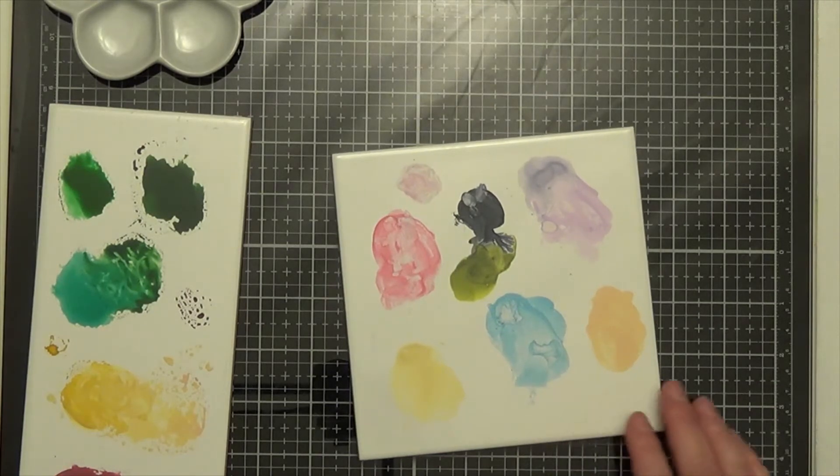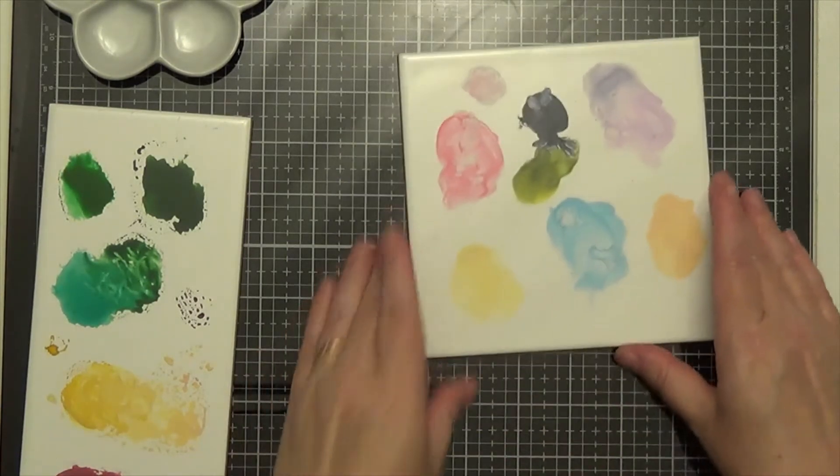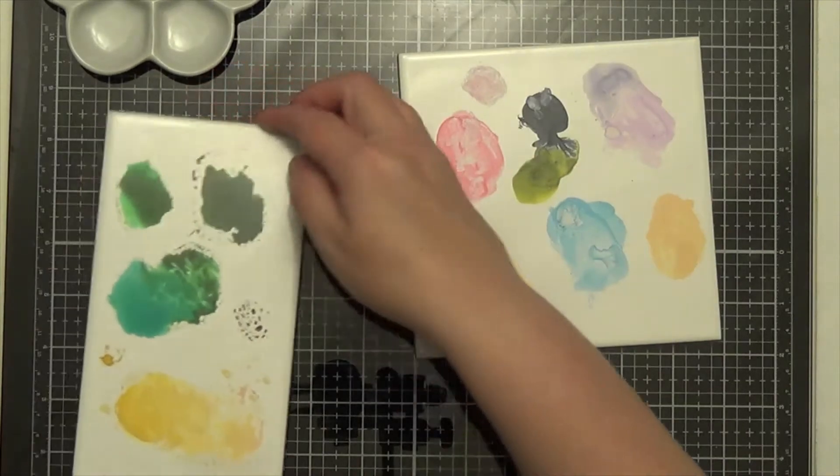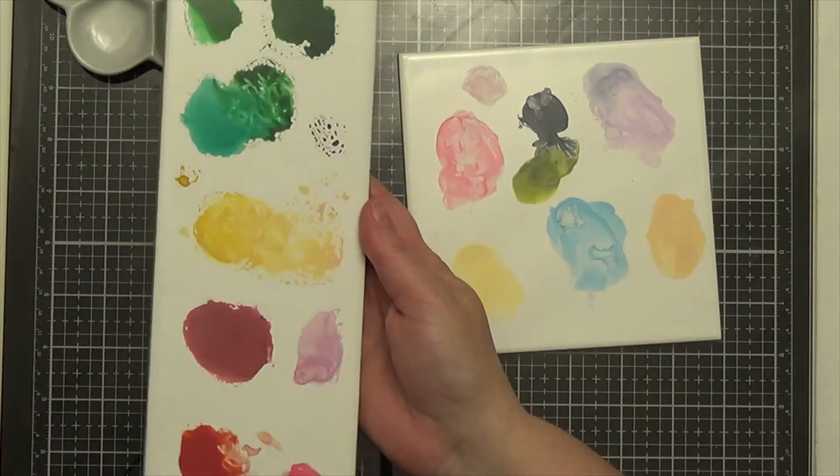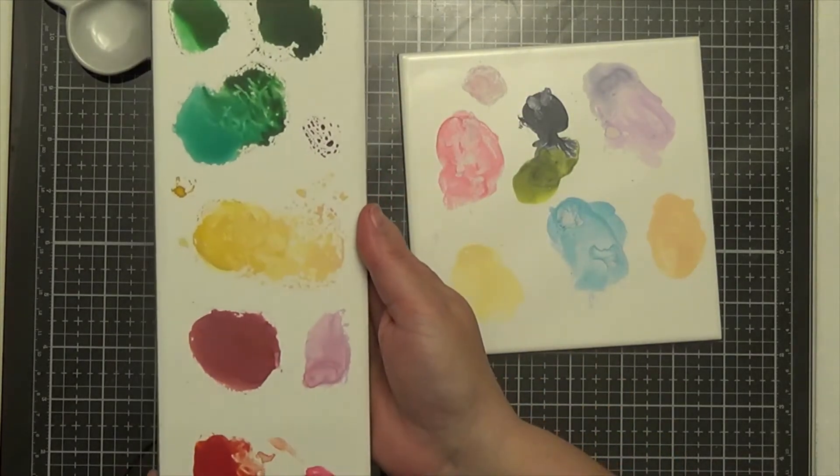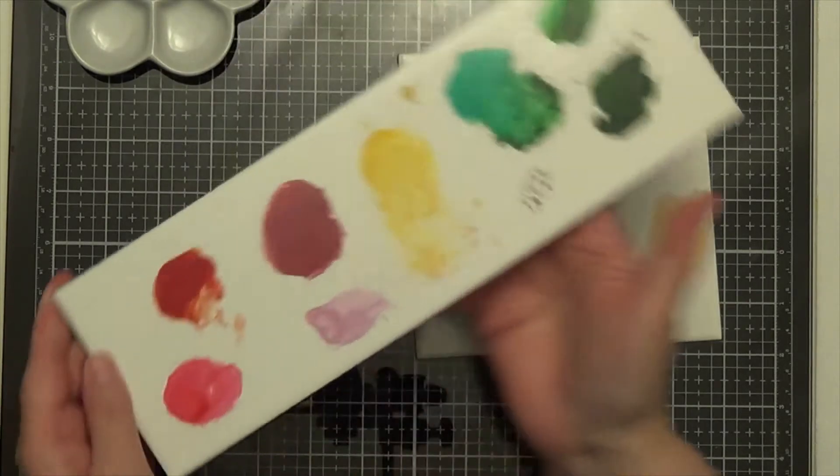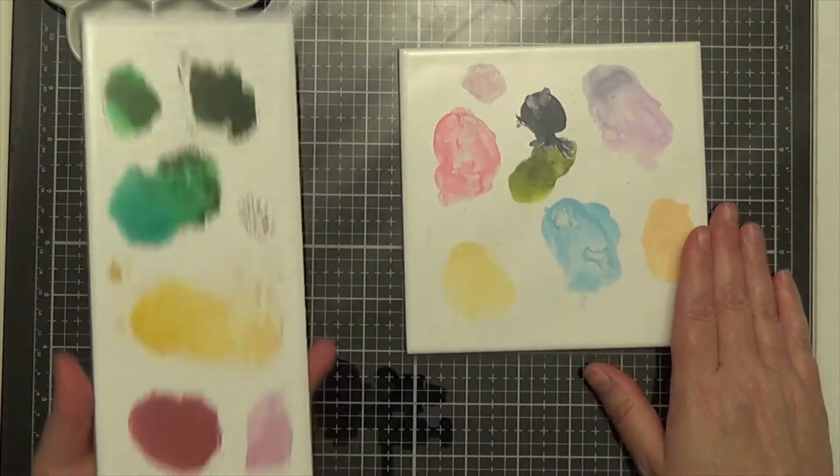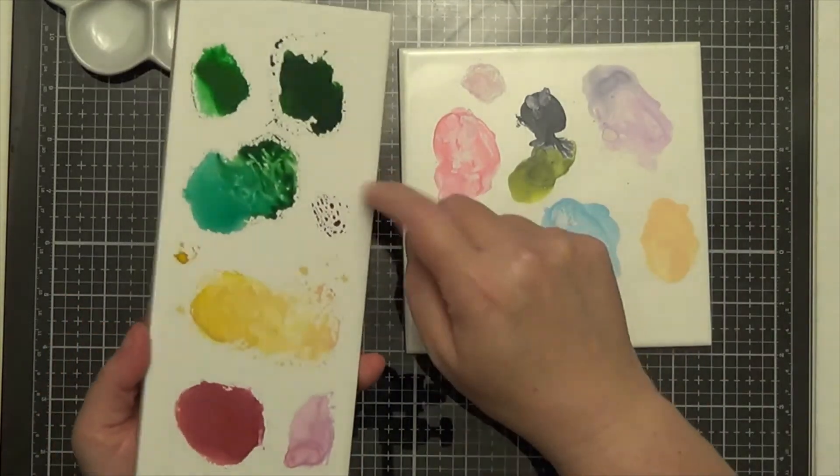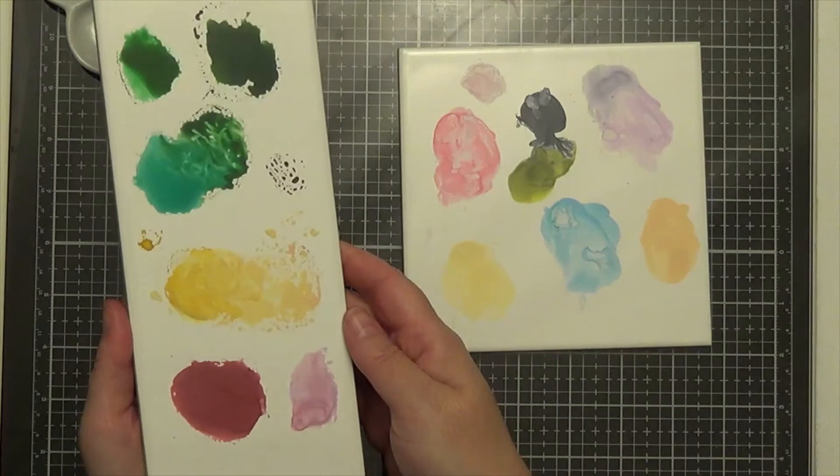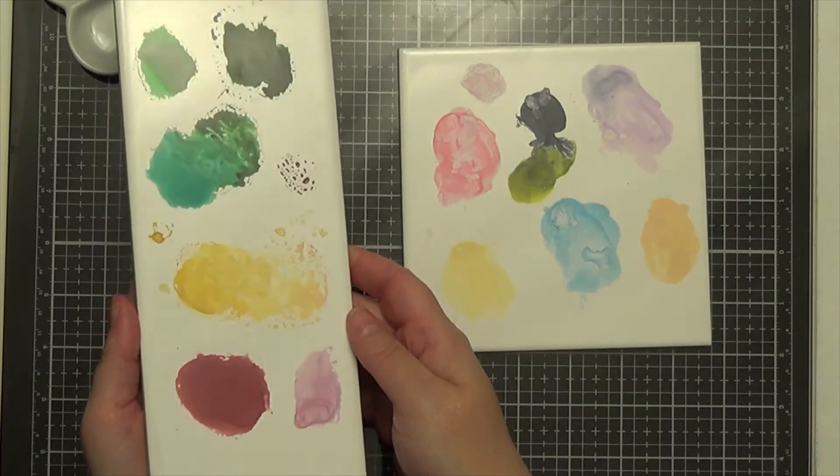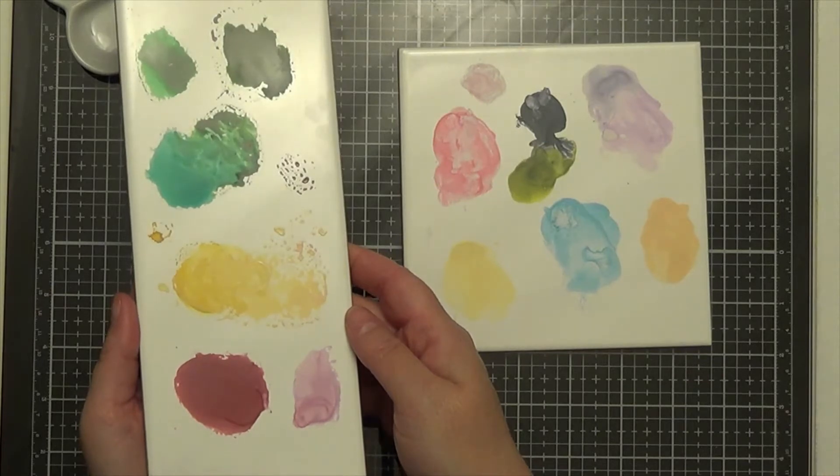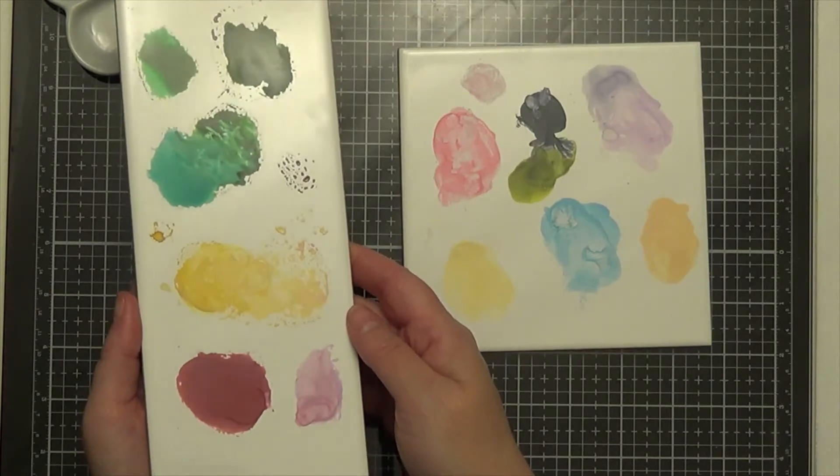When I was on vacation, I took some time and went to my local Lowe's and I found these two. I wanted white so that it wouldn't skew the colors at all, so I could see what I was mixing. This one is 12 by 4, this one is 6 inch square, just ceramic tiles. I have loved it.